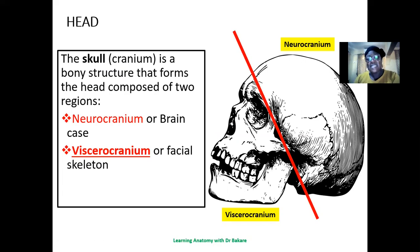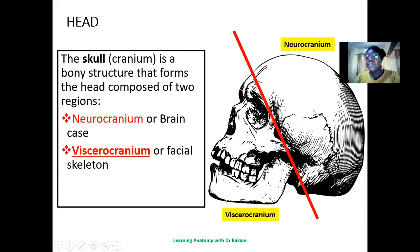The bony configuration of the head is the skull, and the skull is subdivided into two: the neurocranium and the viscerocranium. The neurocranium is the upper part, also referred to as the brain case — it accommodates the brain tissue. The lower part, which forms the skeletal system of the face, is the viscerocranium, and this accommodates sense organs which include the eye, the nose, the tongue, and so on.